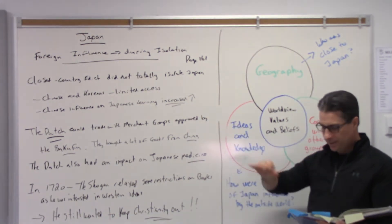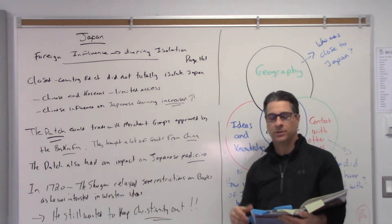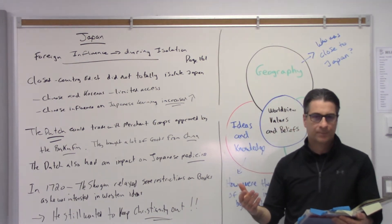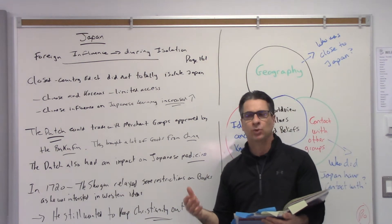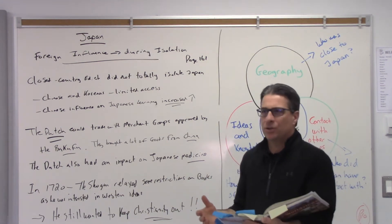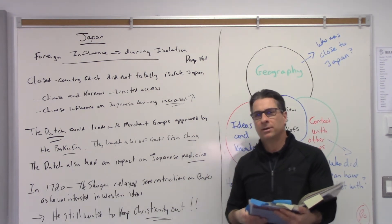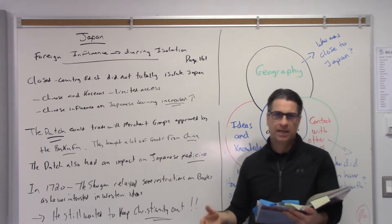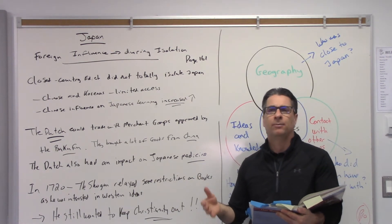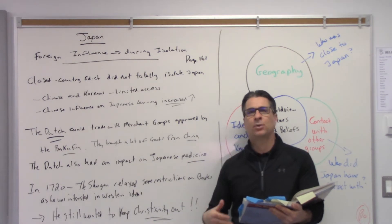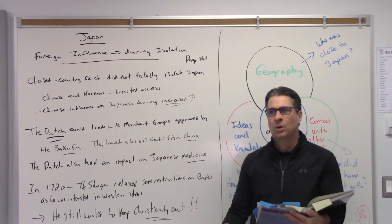The last pages to read are 161 and 162, just talking about did this isolation really stop everything? The answer is no. What the Shoguns wanted to stop was Christianity, right? They wanted to stop the influence of Portugal and Spain because they brought Christianity with them.